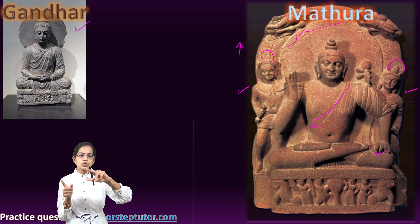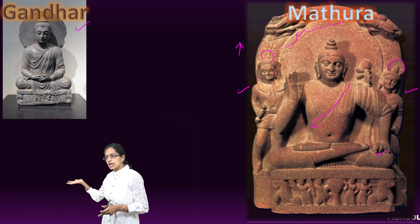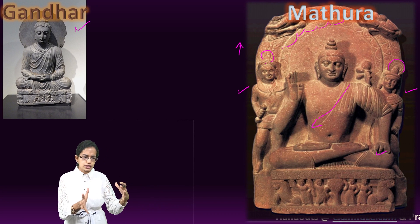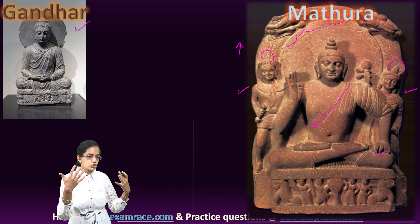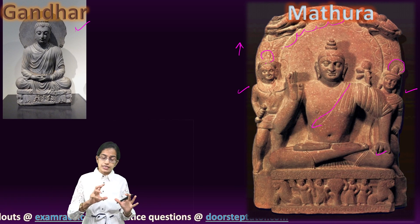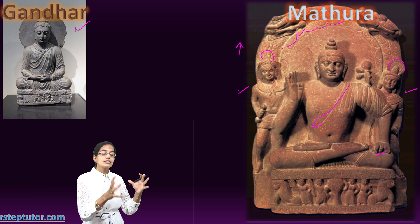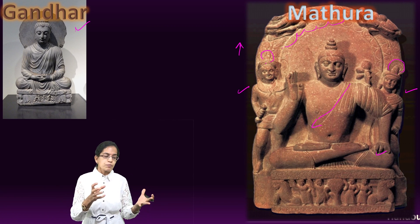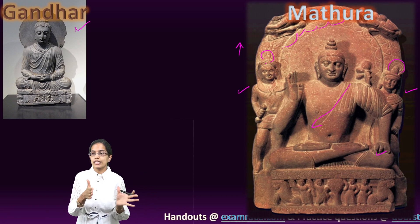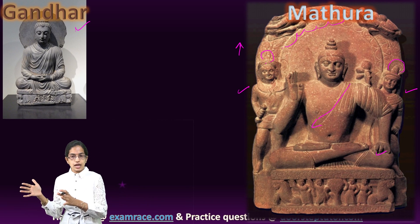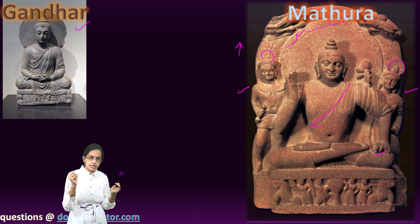In Mathura style, the decoration was geometrical and the flexibility of earlier styles was replaced by more rigidity and an earthy look. The face of Buddha was considered more round with fluffy cheeks. In Gandhara style, by contrast, the face was not round with fleshy cheeks.